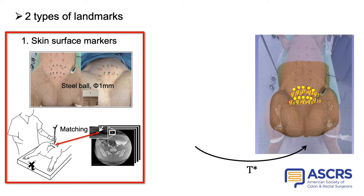However, skin surface markers can easily be displaced due to postural changes because the skin is highly deformable and displaceable. Therefore, registration using only skin surface markers can result in large TRE values. It is necessary to select landmarks that are less susceptible to displacement to achieve more accurate navigation.